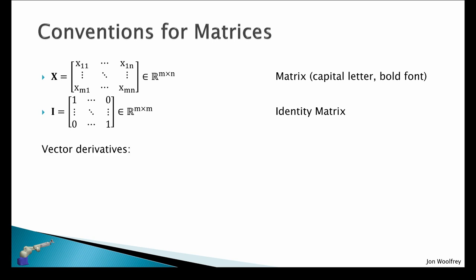Now for vector derivatives, suppose we have a vector function of x given by f here, and each element in this vector is a scalar function of x, so f1 to fm. And here we have the vector x which is n-dimensional, so x1 to xn.